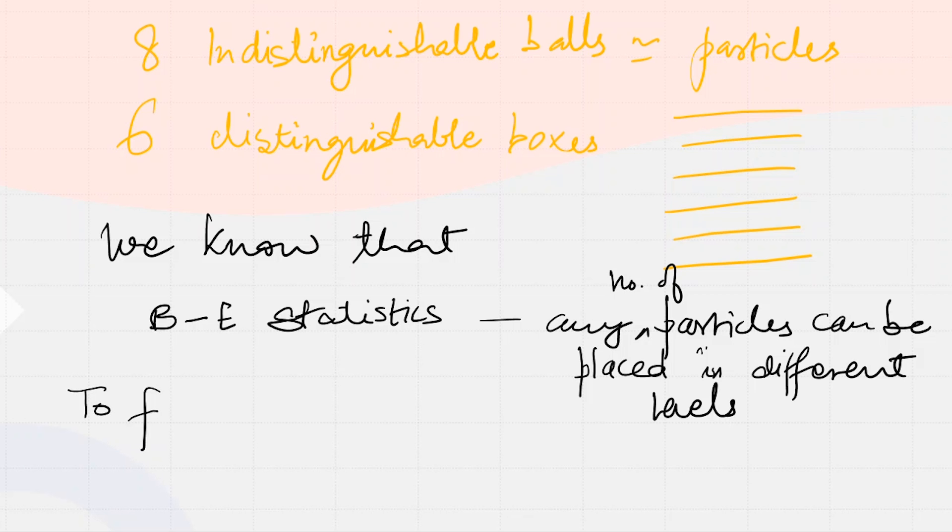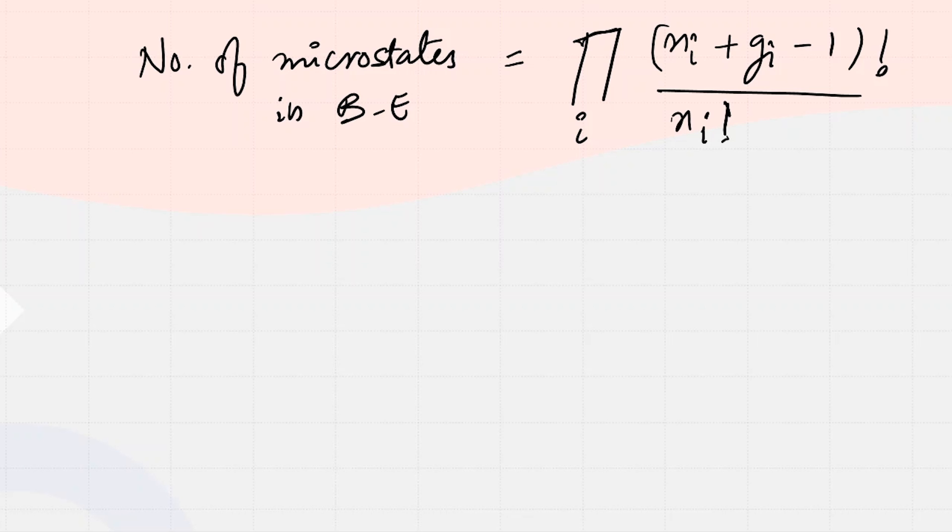The number of microstates in BE statistics can be given as a product: (ni + gi - 1)! divided by (ni! × (gi - 1)!). This is the formula where ni is the number of particles - we have eight indistinguishable particles - and gi is our number of levels.